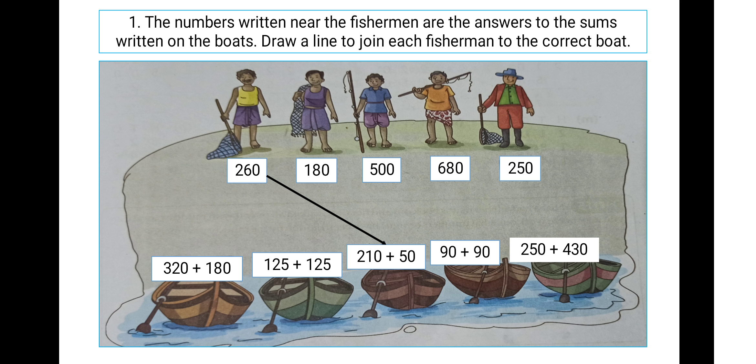From the first perspective, the first fisherman has 260. That means his boat is 210 plus 50, which means 210 plus 50 is equal to 260. So the first fisherman's answer goes to the third boat, which has 210 plus 50 written on it. In this way, we come to know how we have to add the numbers and get the real answers.